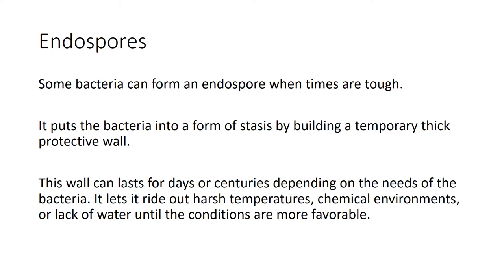One interesting trick some bacteria can do is form an endospore — almost like a tumbleweed. It puts the bacteria into stasis by building a thick protective wall around it, preventing dehydration and blocking harsh temperatures or chemicals. The bacteria go dormant and could survive for a few days or even hundreds to thousands of years, until the environment becomes favorable again and the endospore breaks down.